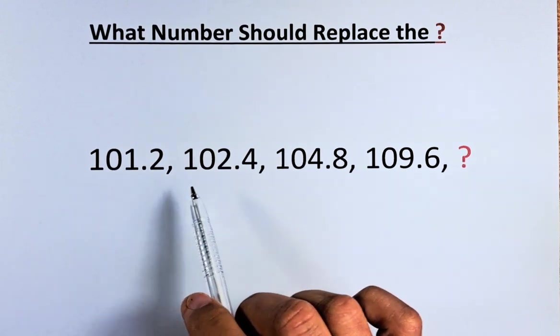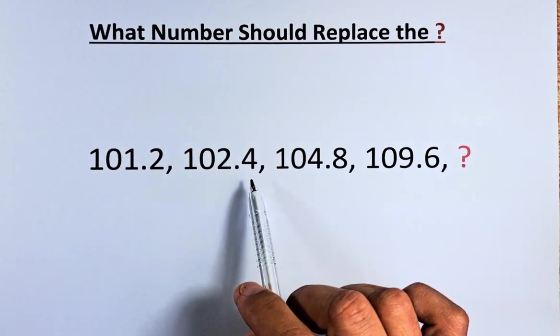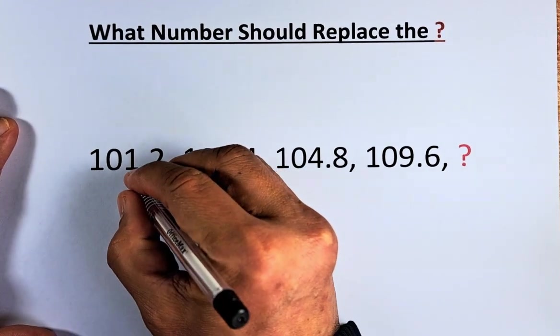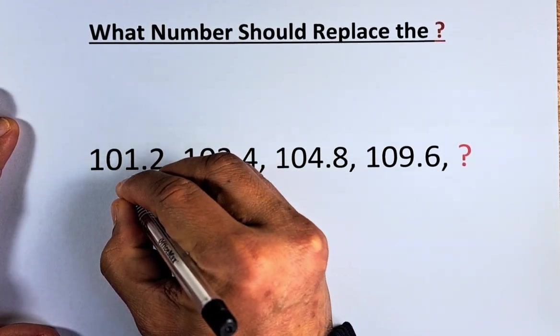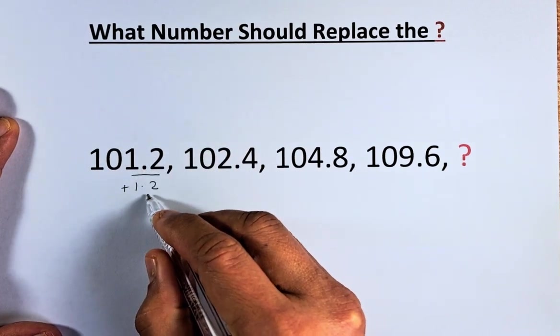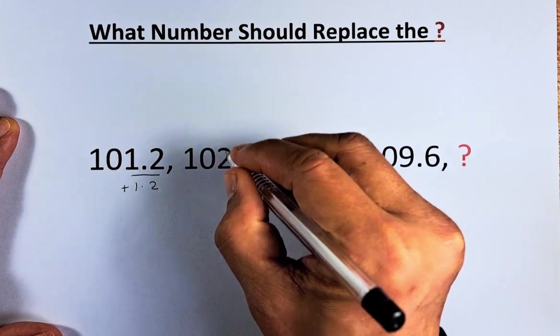101.2 to 102.4, you can see that the difference is just the last two digits. If you add 1.2, 101.2 plus 1.2 will give you 102.4.